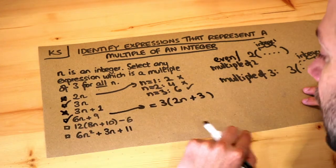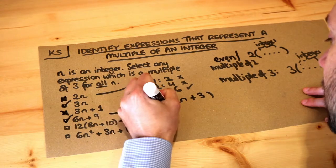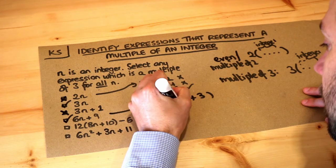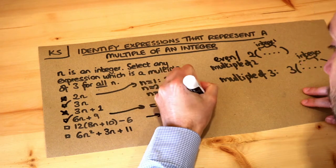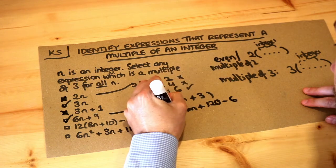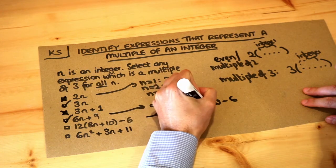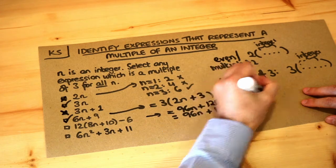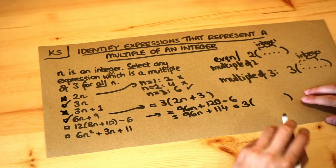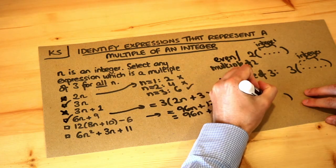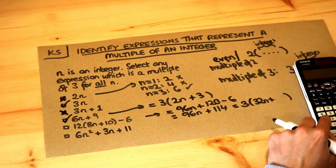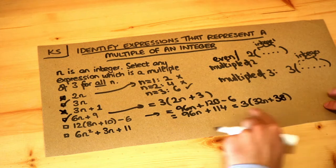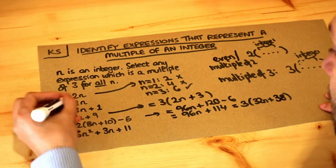What about the next one — can we factorize three out here? Let's expand first. 12 times 8n is 96n and 12 times 10 is 120 minus 6, giving 96n plus 114. We can factorize three out: three times 32n is 96n, and three times 38 is 114. So that's three times something, meaning this is guaranteed to be a multiple of three.